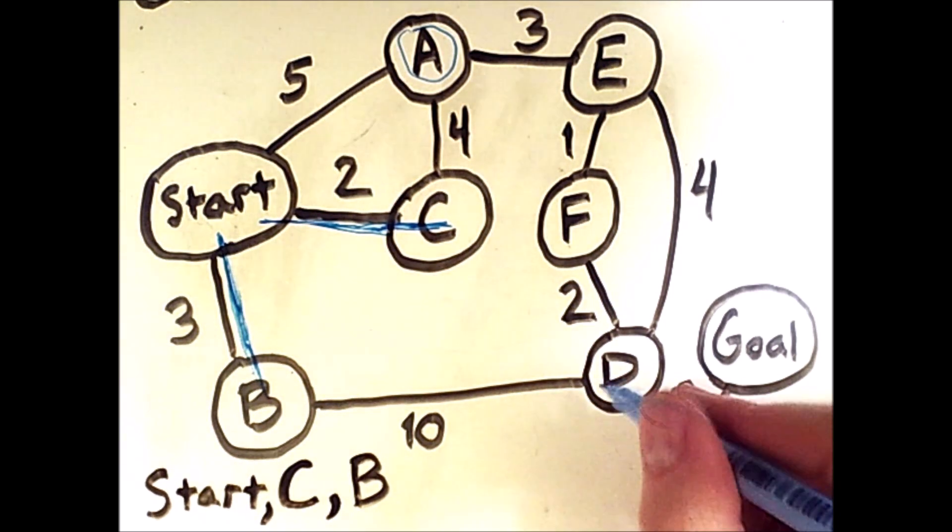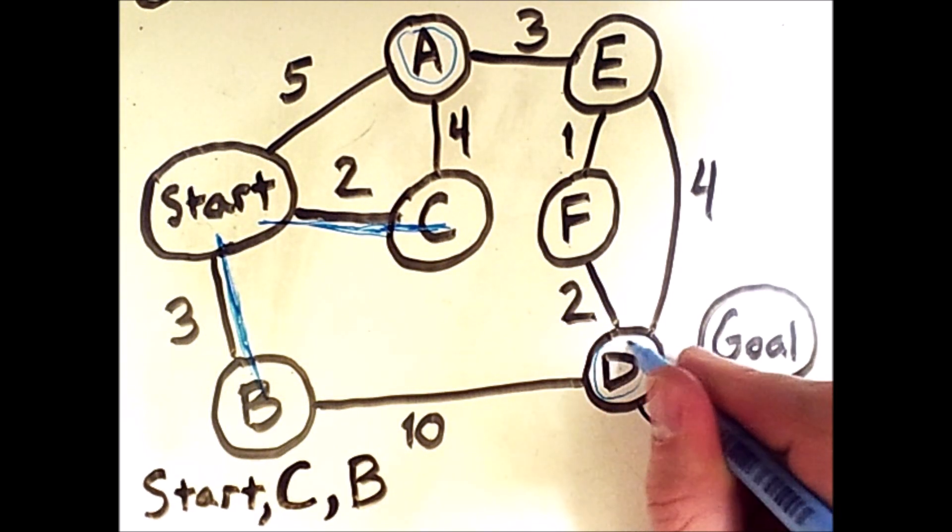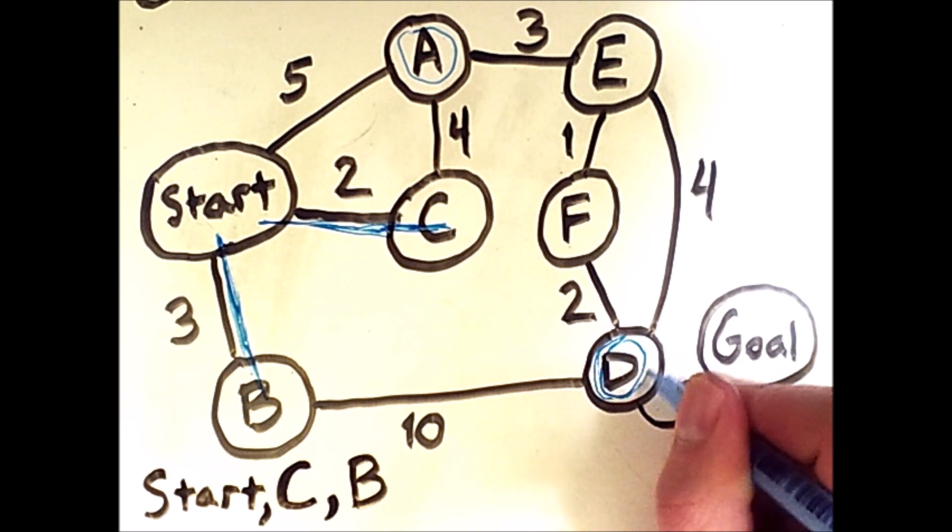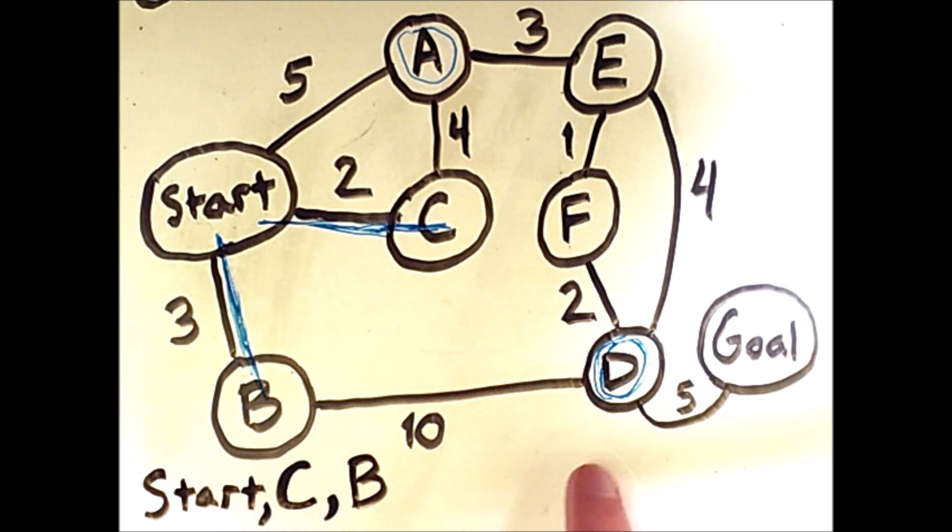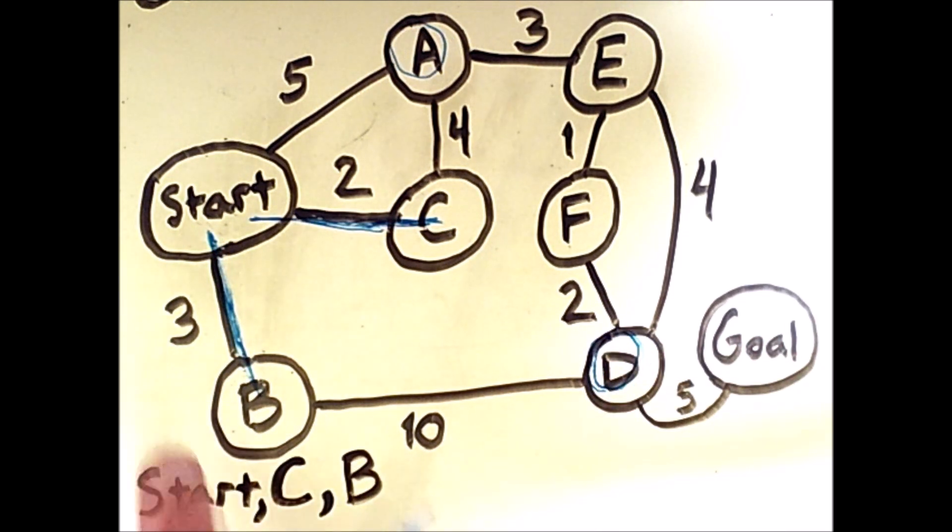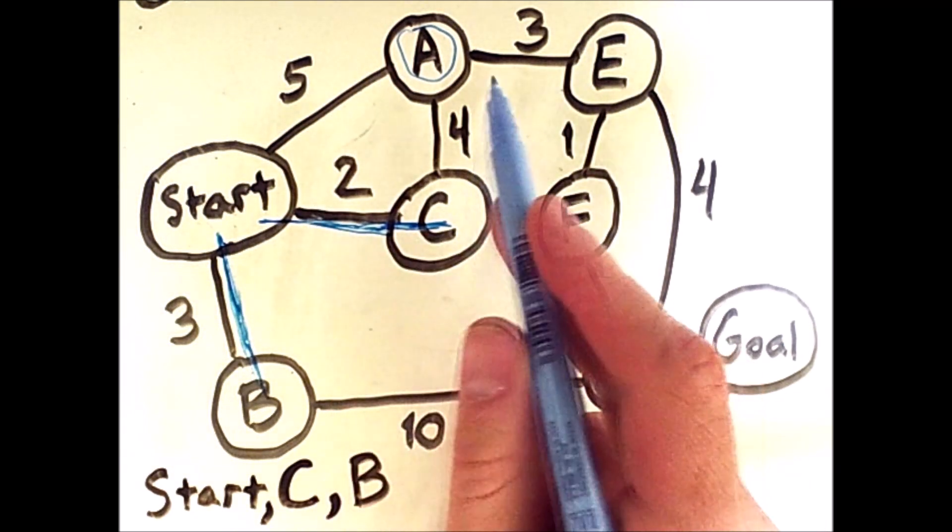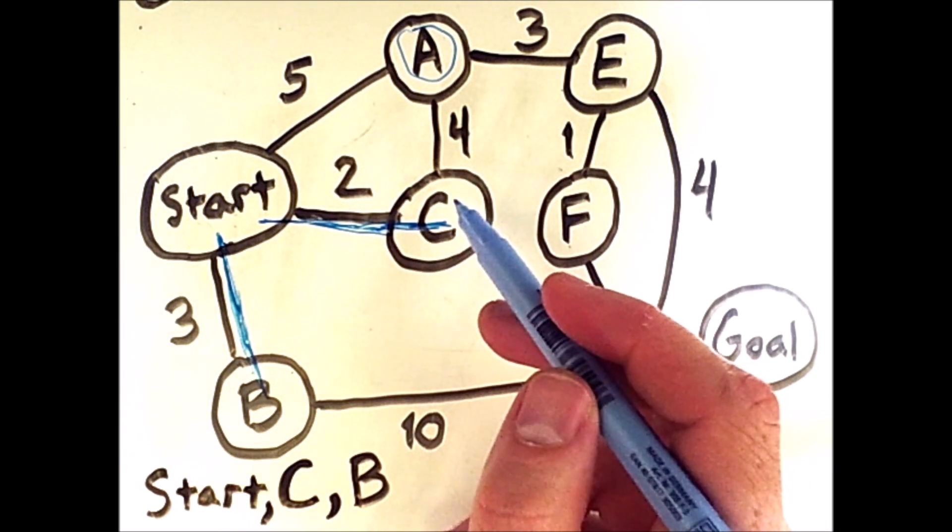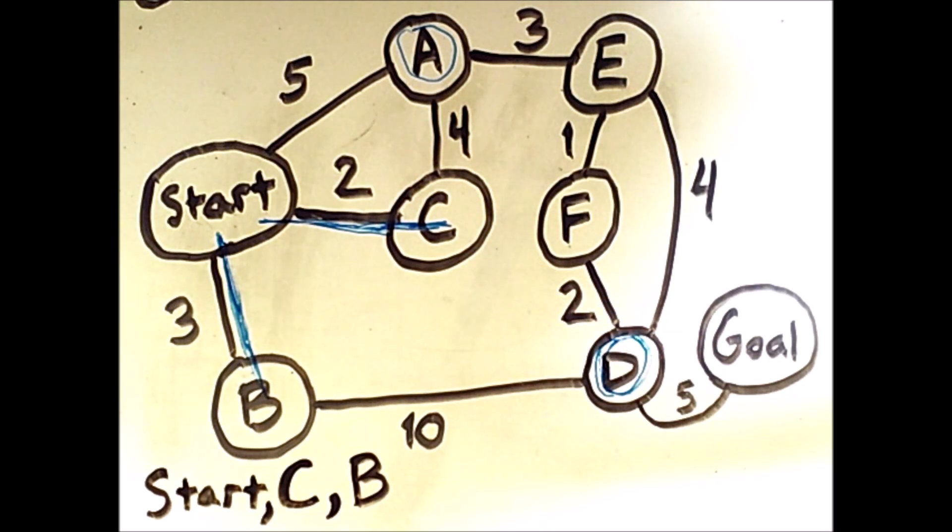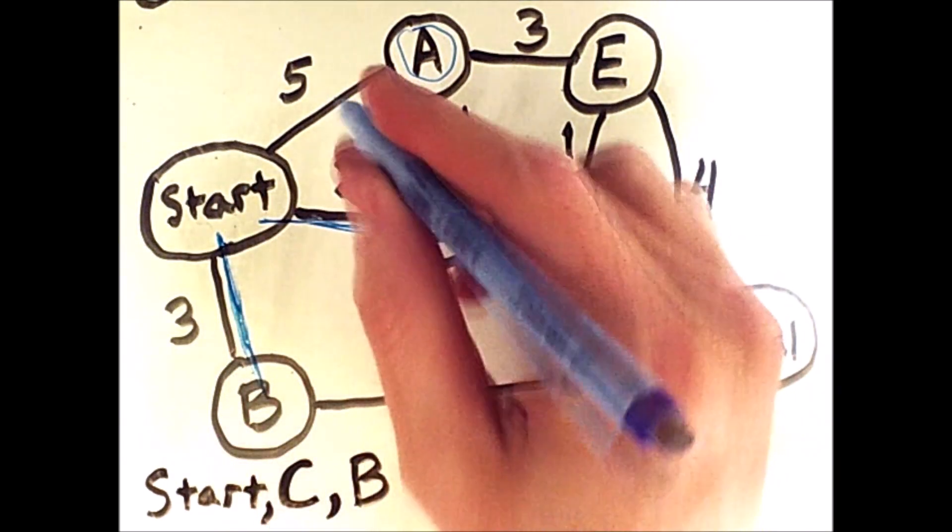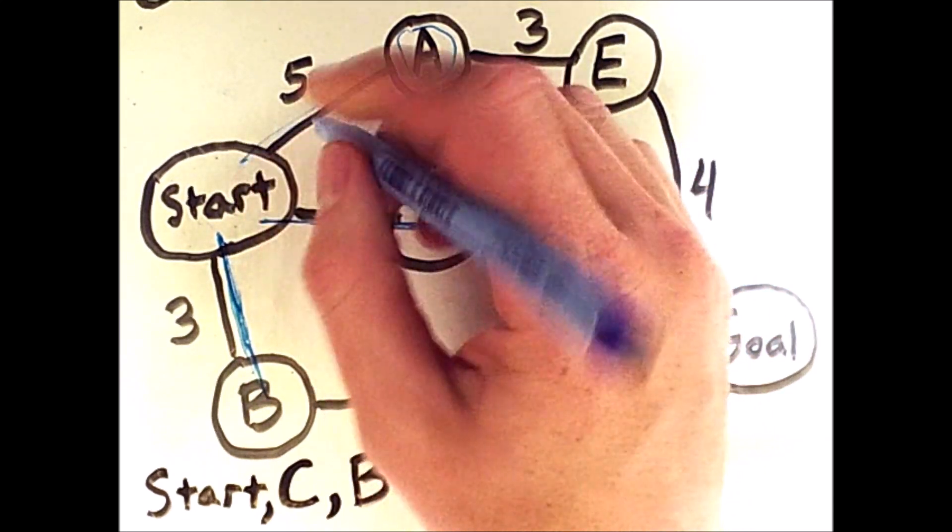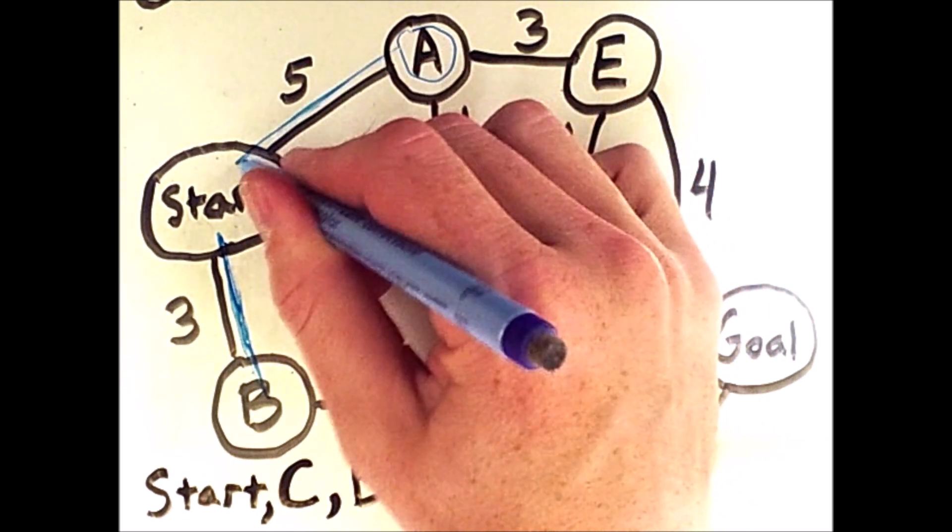At this point, we actually get to add D to the fringe. It's a very high cost, therefore we'll look at our other options. We still have this option to go to A for a cost of 6, but ultimately the cheapest option currently available to us is going to A from the start. So we'll go to A from the start for a cost of 5.